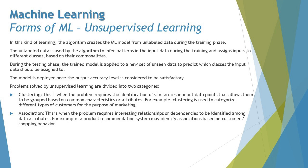Once trained, during the testing phase the trained model is applied to a new set of unseen data to predict what classes the input data should be assigned to. For example, you take a new picture of a person and check whether it gets added under the correct face group in the gallery. You may observe some misalignment — perhaps the picture was unclear or the angle matched someone else. The model is deployed once the output accuracy is considered satisfactory.